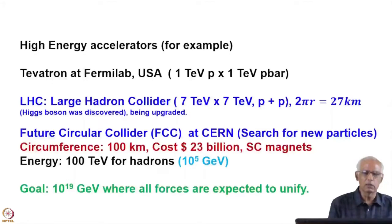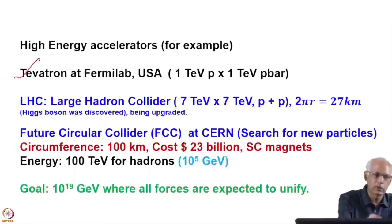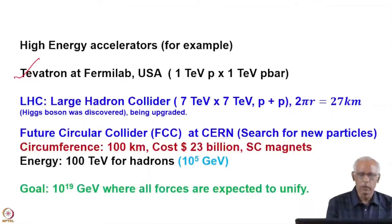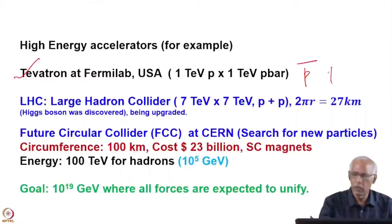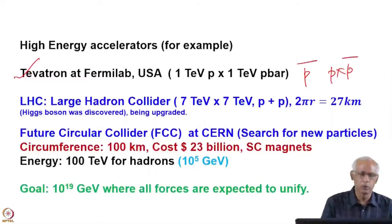Let me tell you the status of high energy accelerators with two examples. One is the Tevatron at Fermilab, which is a colliding ring where one TeV proton interacts with another one TeV anti-proton, and these collisions are studied. This is a proton–anti-proton (p–p̄) collision.